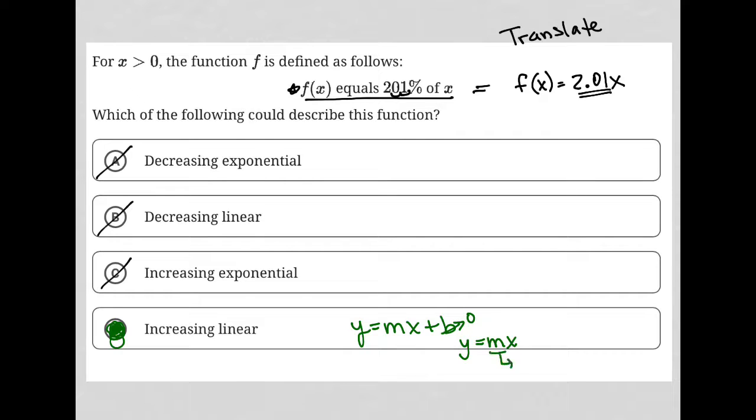And for us, our m value is 2.01. So this is just our slope here to the linear graph or linear equation. So, let's move on.